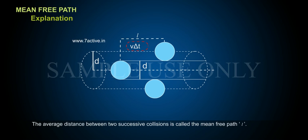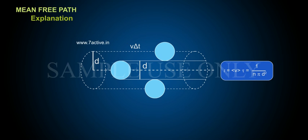The average distance between two successive collisions is called the mean free path l. l equals v tau equals 1 by n pi d square.